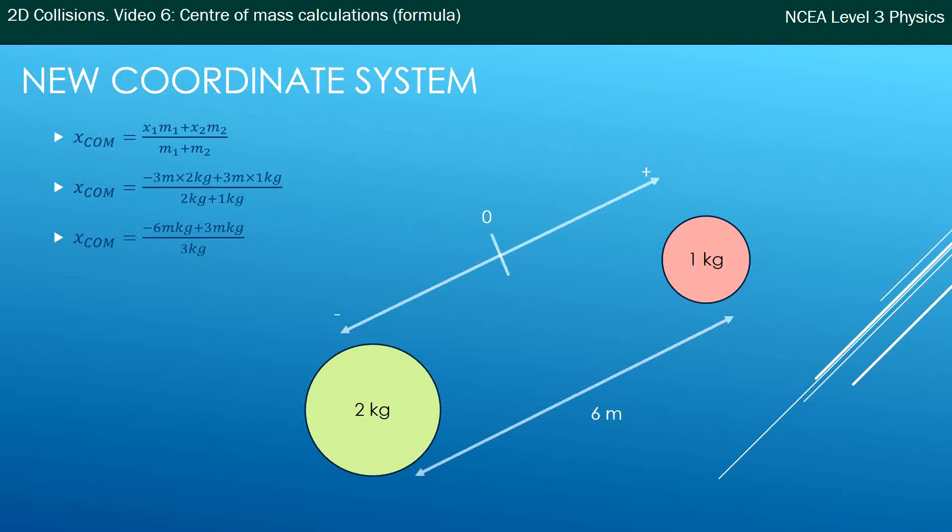When you simplify that down you get negative 6 plus 3 on the top of the fraction which gives you negative 3 and your overall answer of where the center of mass is is negative 1 meter. What does that mean?